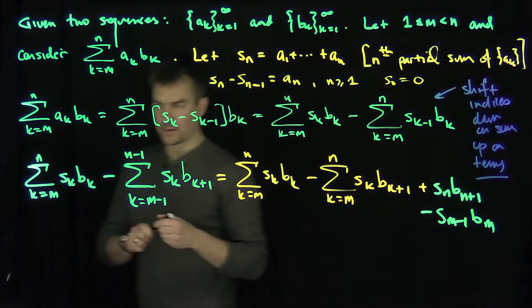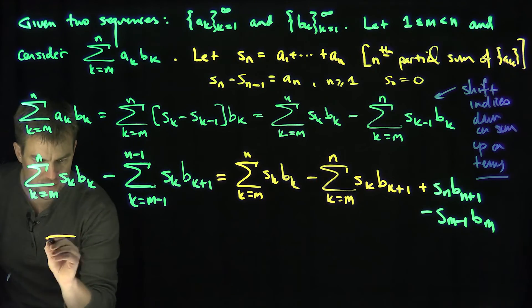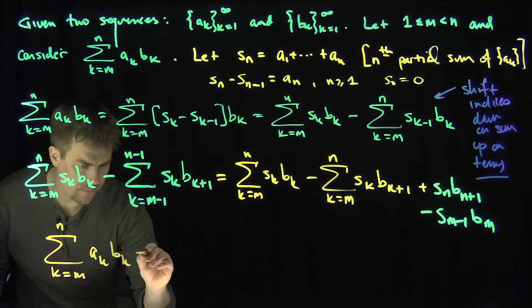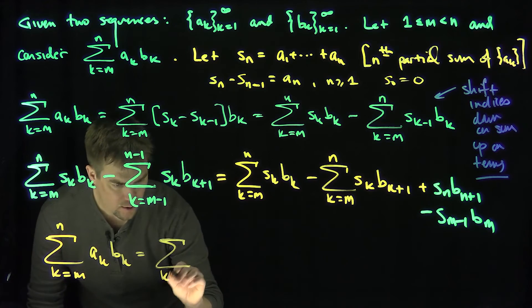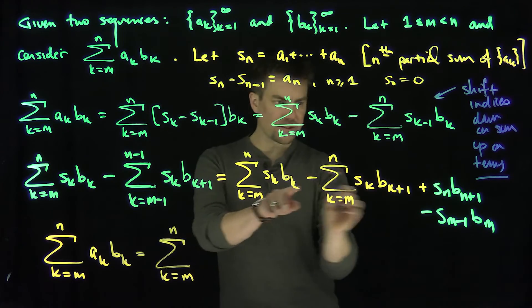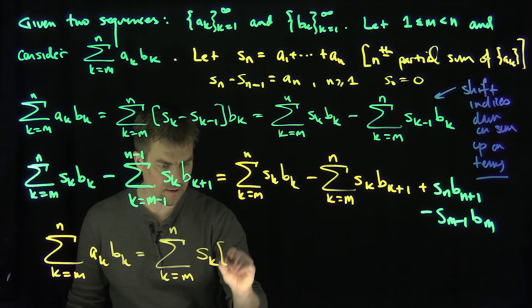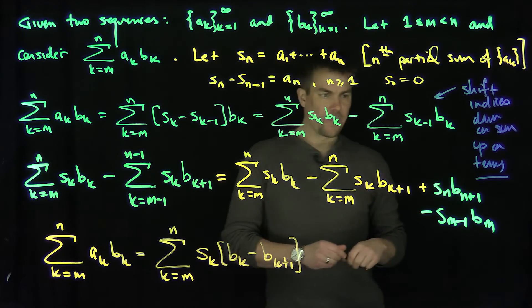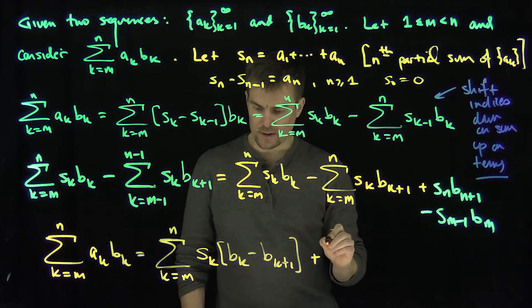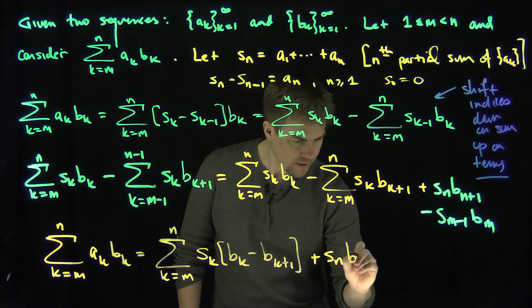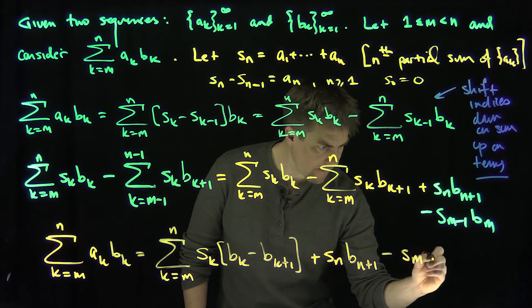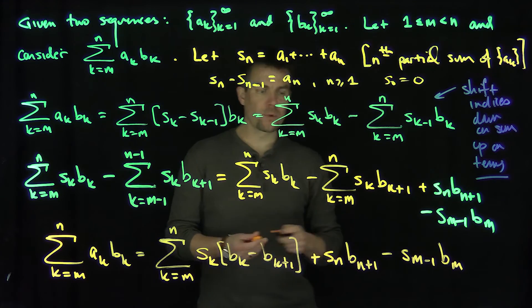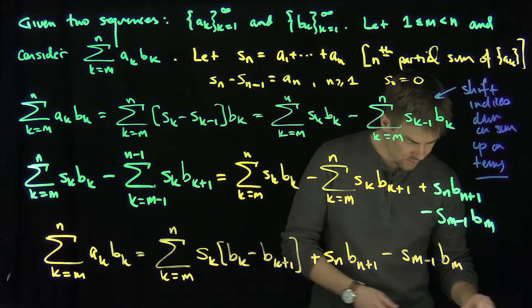And now we have our summation by parts formula. Therefore, the sum of a_k * b_k for k from m up to n equals the sum of S_k * (b_k − b_{k+1}) for k from m up to n, plus the boundary terms S_n * b_{n+1} minus S_{m-1} * b_m — with the convention that S_0 = 0 when m = 1. This formula is known as summation by parts.